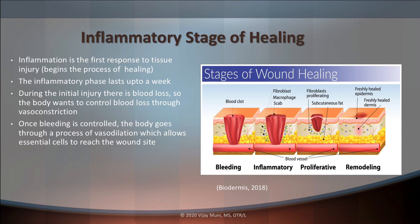During this time, our body begins to send specialized cells to clean up or break down damaged tissue, debris, and bacteria. Then after this, the mast cells within our body release histamines, which causes our blood vessels to go through a process called vasodilation — basically opening up the blood vessels — which allows essential cells to reach the wound site and begin the healing process.